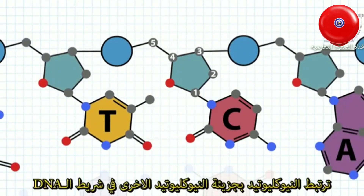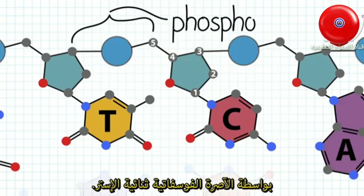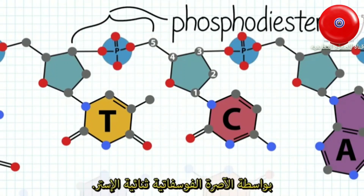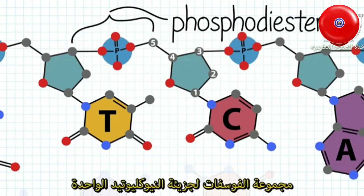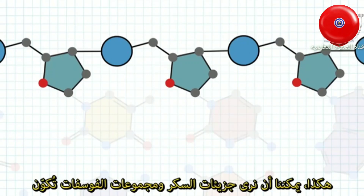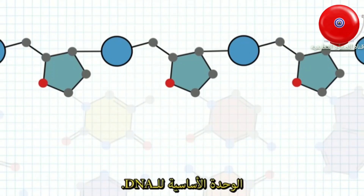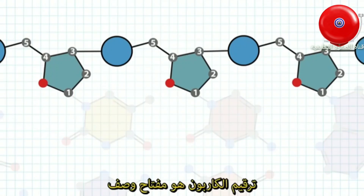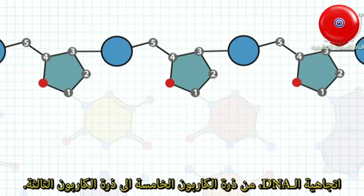Nucleotides attach to each other in the DNA strand by phosphodiester bonds. The phosphate group of one nucleotide binds to the 3' oxygen of the neighboring nucleotide. Thus, we can see that the sugars and phosphate groups make up the DNA backbone. The carbon numbering is key to describing the directionality of the DNA strand, 5' to 3'.